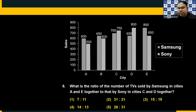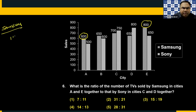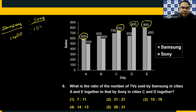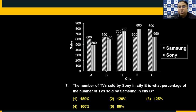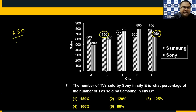Question number six: Ratio of number of TVs sold by Samsung in A and E to Sony in C and D. Samsung in A and E: 600 plus 800 equals 1400. Sony in C and D: 750 plus 800 equals 1550. Simplifying, that gives 28 is to 31. Choice five. Question seven: Number of TVs sold by Sony in C is what percentage of TVs sold by Samsung in C? Sony C is 650, Samsung C is 650 — 650 cancel, that is 100 percent. Choice four.